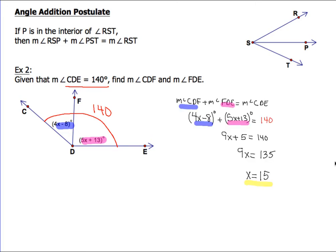This is what your equation would look like. Measure of angle CDF plus measure of angle FDE equals the measure of angle CDE. Be sure to write down that first line. The second line is where we substitute. We're going to take 4x - 8 and substitute that for the measure of angle CDF. And 5x + 13 is substituted for the measure of angle FDE. 140 gets substituted for the measure of angle CDE. On our third line, we combine like terms. We get 9x + 5 = 140.